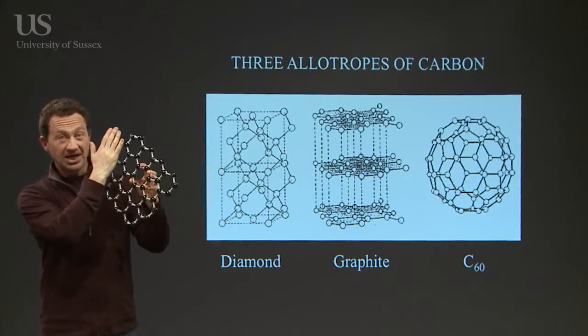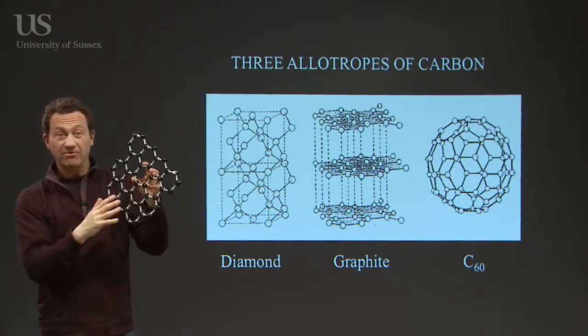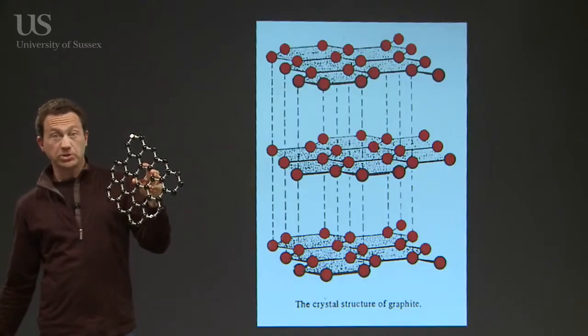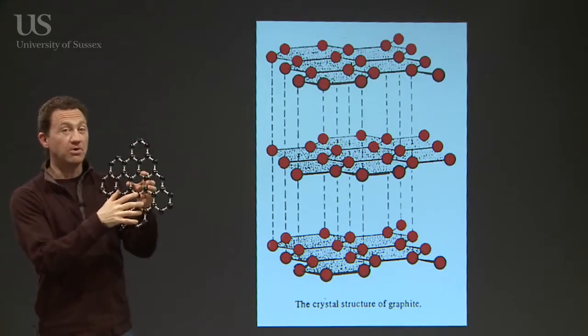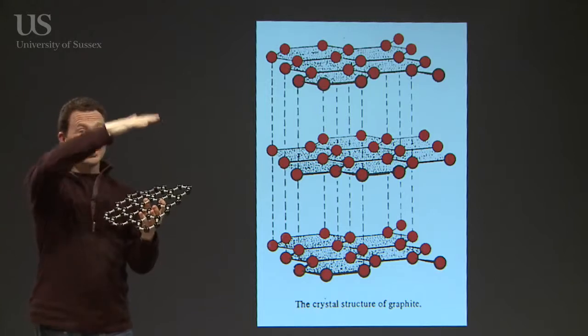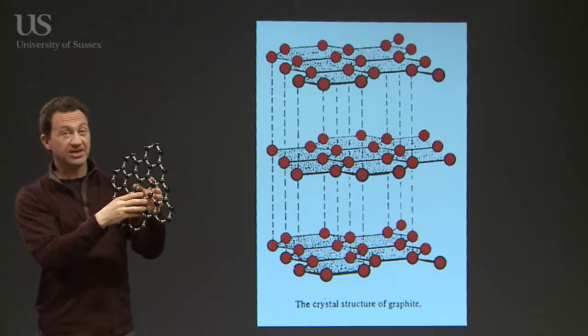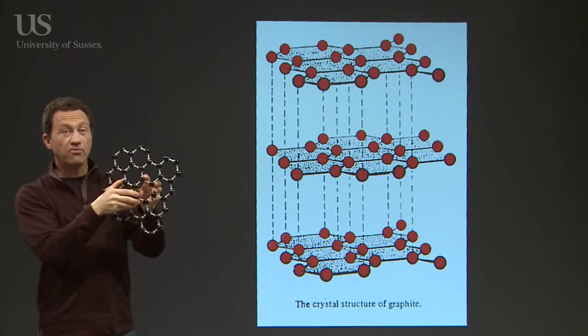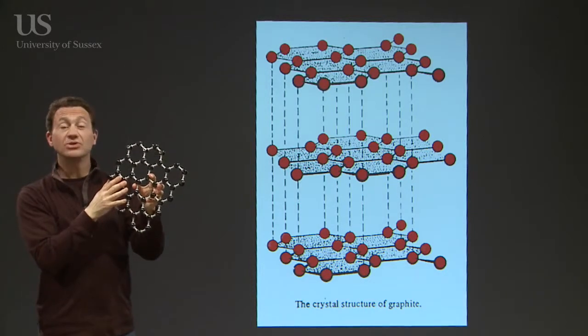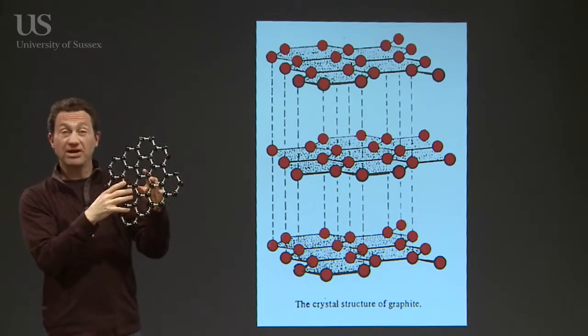It turns out that if you can extract a single sheet from a layer of graphite, so for example at the back here we've got a picture of what graphite could be. Lots and lots of sheets of carbon atoms, one on top of the other. If you can just take off one of these sheets, so you've got a single sheet of graphite, it's called graphene.